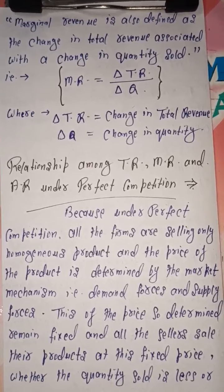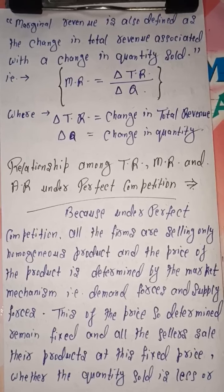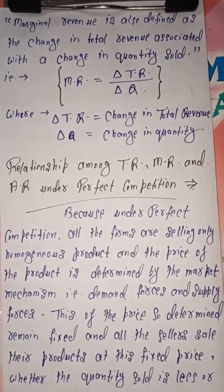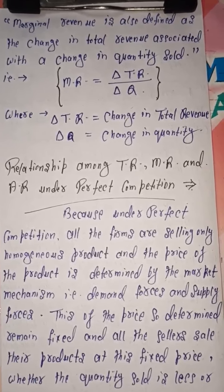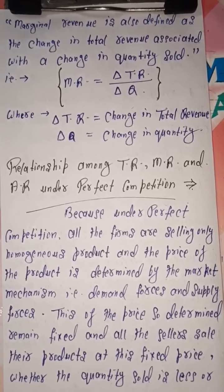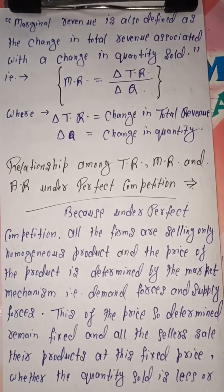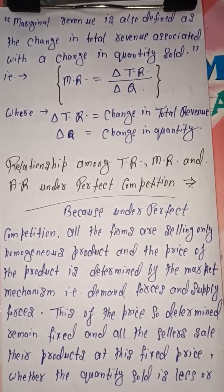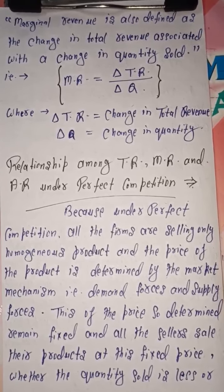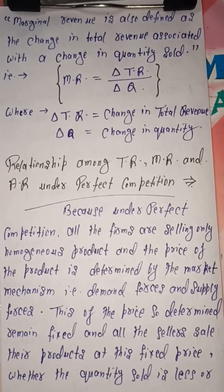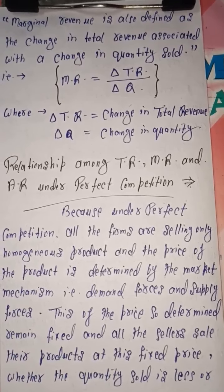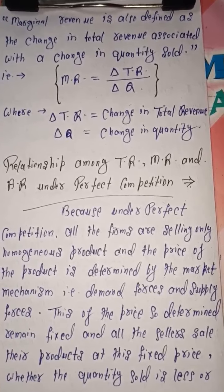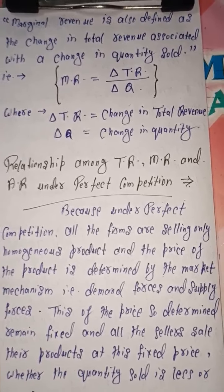Now we will talk about the next topic: the relationship among TR, MR, and AR. We will discuss two types of competition — the first is perfect competition and the second is imperfect competition. In both cases, the relations among TR, MR, and AR will be defined differently. First, let's discuss perfect competition and what relation exists among these three under this particular type of competition.